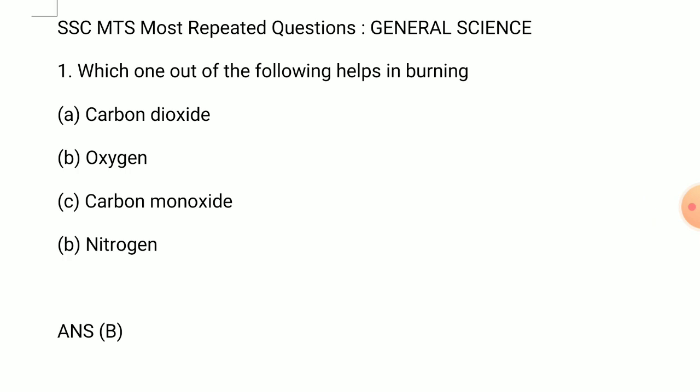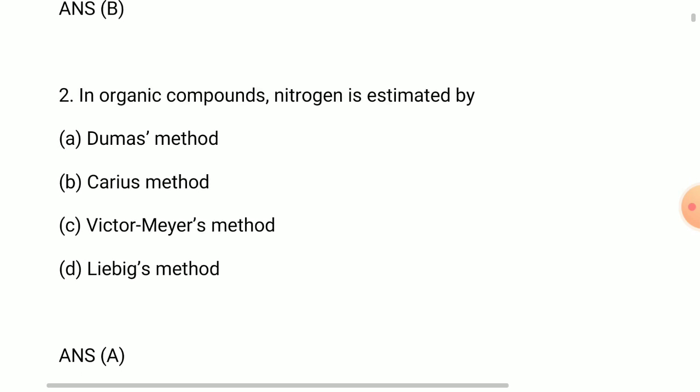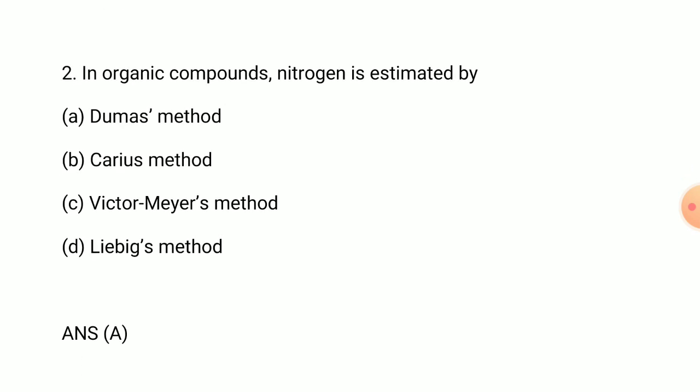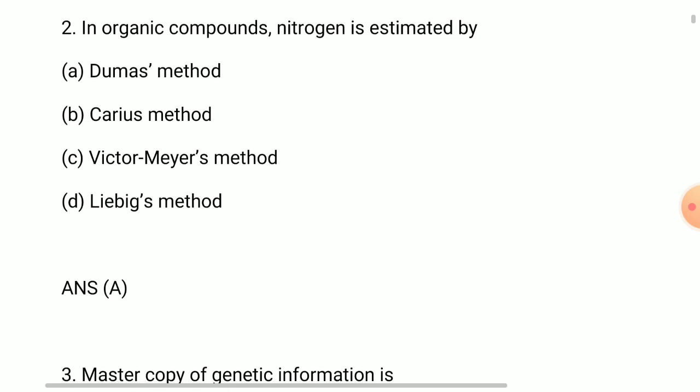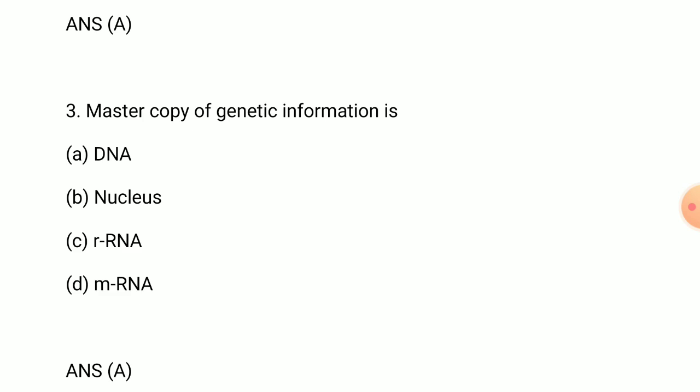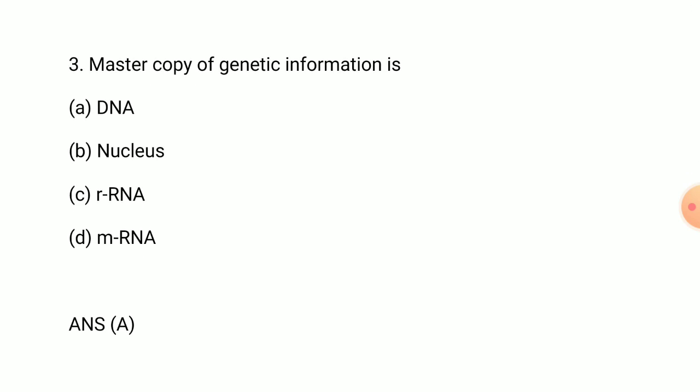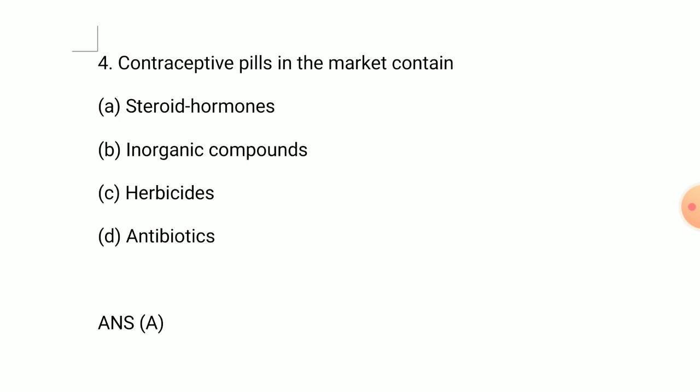Question number two: in organic compounds nitrogen is estimated by answer is Dumas method. Question number three: master copy of genetic information is answer is DNA.